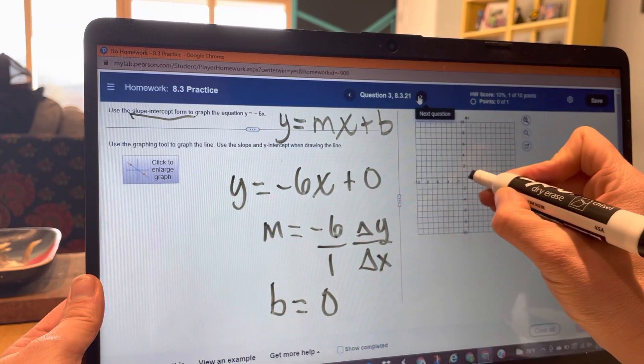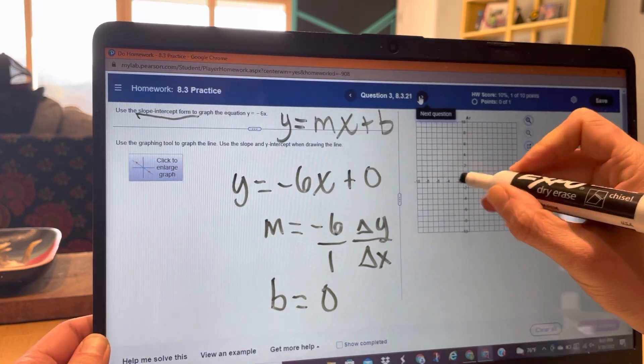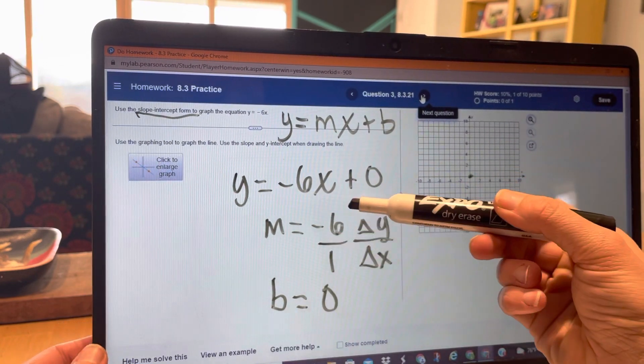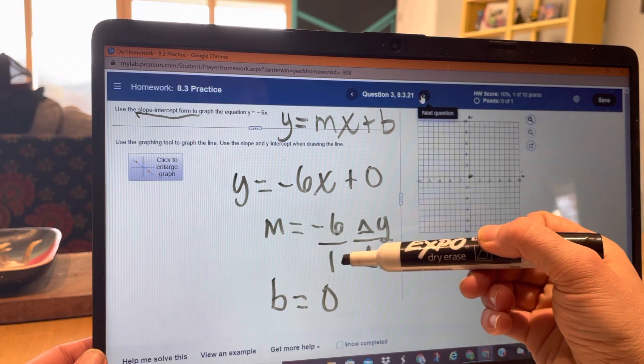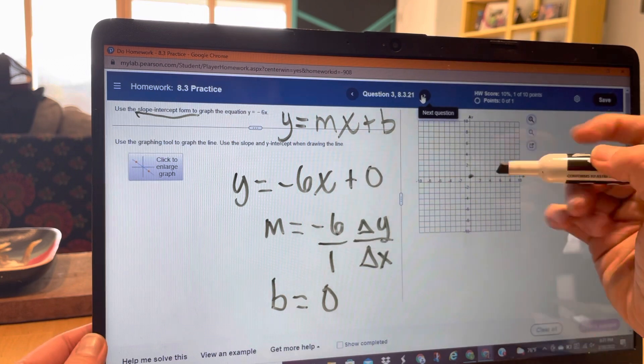So I'm going to be starting at 0 on the y-axis. I'm going to be, you might have also heard it called rise over run, or change in y over change in x. So I'm going down 6 to the right 1.